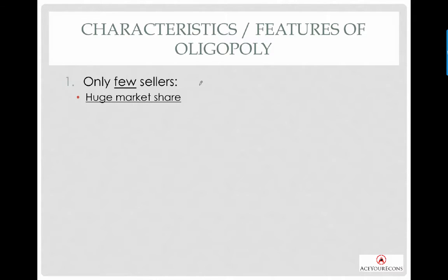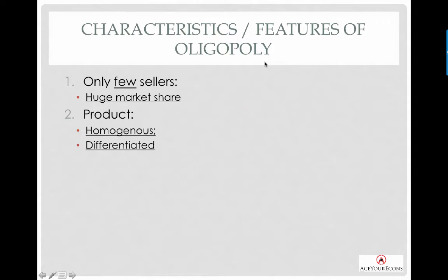When you have a few sellers, there is reduced competition. The more sellers you have, the more competition there is, and the fewer sellers you have, the less competition. For monopoly there is only one seller, so there is no competition. In oligopoly there is still competition, but it is limited to a few key players only.